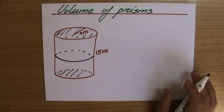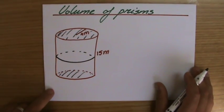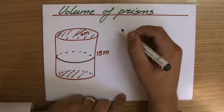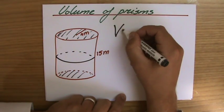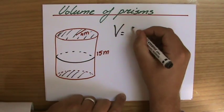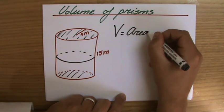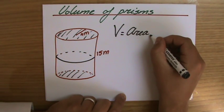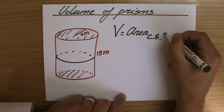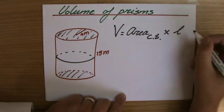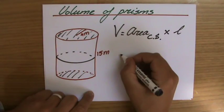So technically not a prism, however to find the volume it works the same. The volume is the area of the cross-section - we just say C.S., cross-section - times the length.